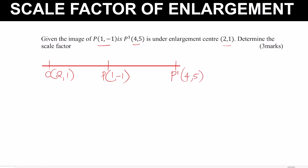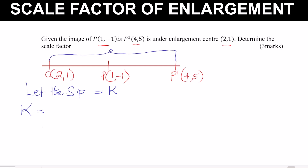Let the scale factor be represented by k. The scale factor k is given by the image distance divided by the object distance. The image distance is from the center C to the image P' — that is CP'. The object distance is from C to P — that is CP. So k = CP' / CP.